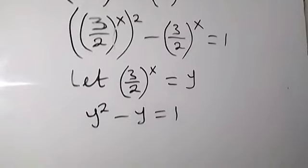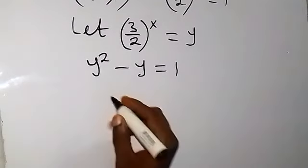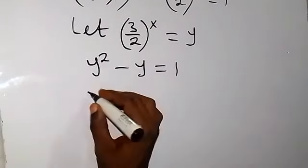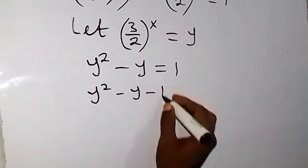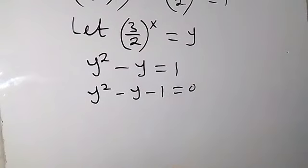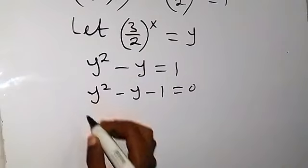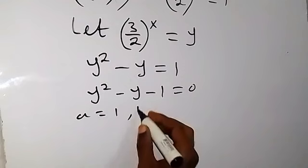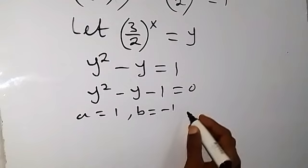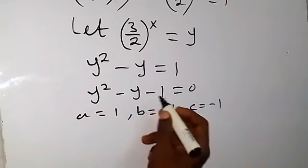So we replace that with y and we have y squared minus y equals to 1. Bringing that 1 to this side we have y squared minus y minus 1 equals 0. So we solve a quadratic equation here, whereby a is 1, b is minus 1, and c is also minus 1.